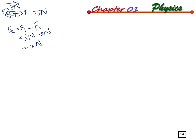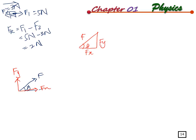If a force acts on a plane horizontally it is easy to solve, but if a force acts at an angle we need to resolve the vector first. Given a force F at angle theta from the horizontal plane, it can be resolved into two components: Fx (x-component) and Fy (y-component). Draw a triangle with F, Fx, Fy and angle theta.